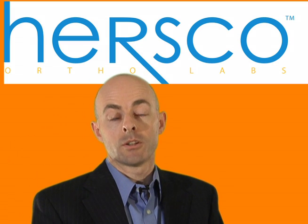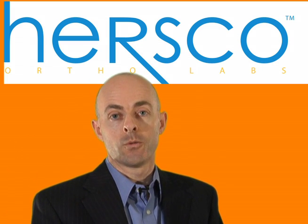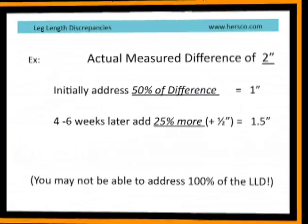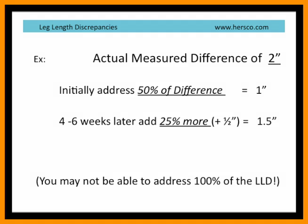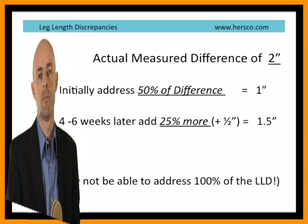Add material under the patient's heel or under their foot and see how much they can tolerate. Look for the signs of comfort. Even if you have measured a leg length discrepancy of, let's say, two inches, it's important not to give them the full lift at the outset. Start at, say, 50% or one inch. If they can tolerate this for four to six weeks, consider adding another 25%, or half an inch.